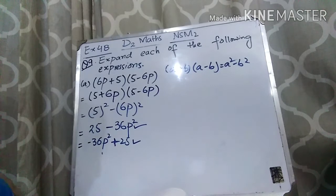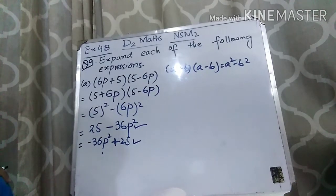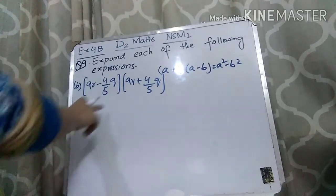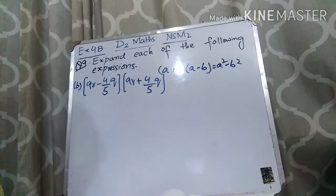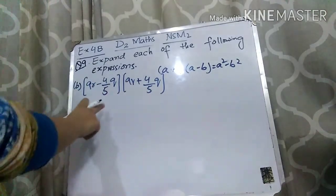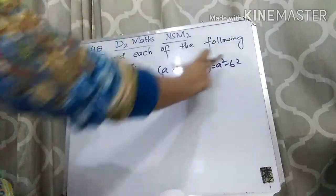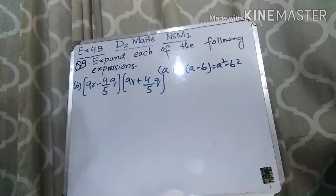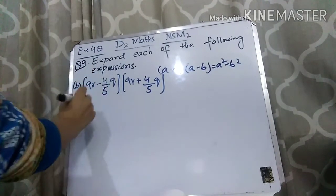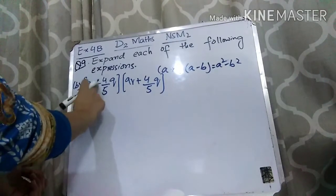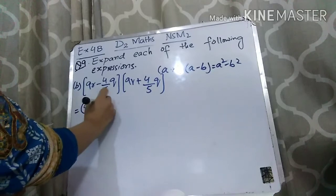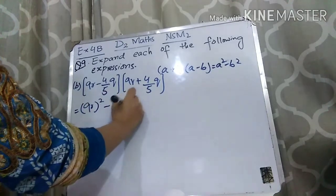Now let's come to Part B. Part B is (9R − 4/5 Q) and (9R + 4/5 Q). Again here you can see that this is A minus B and A plus B, so the formula gives A squared minus B squared. Here A is 9R and B is 4/5 Q.